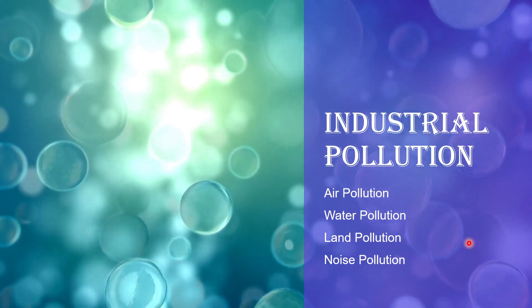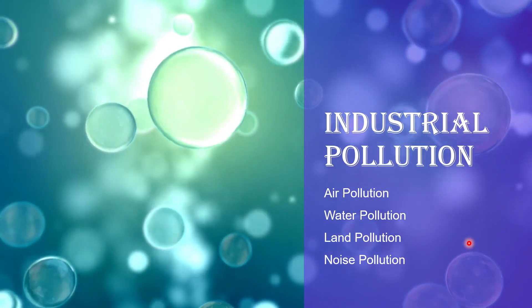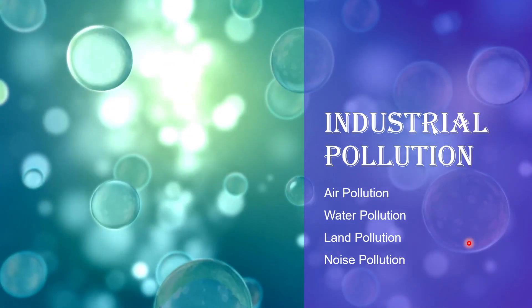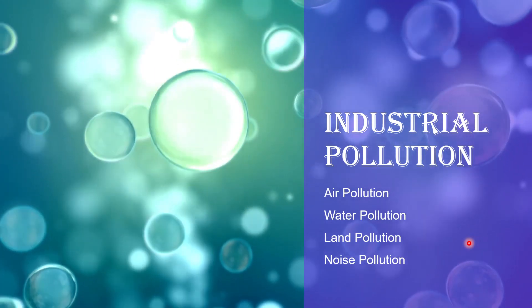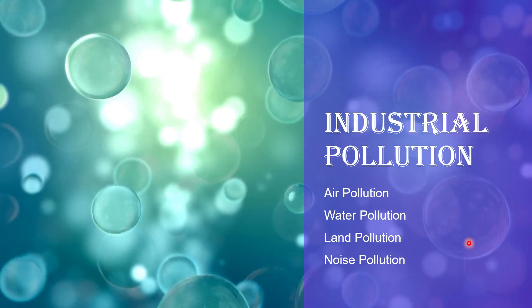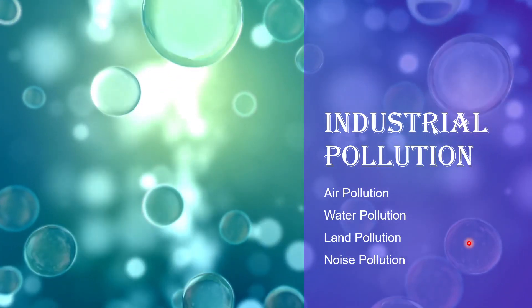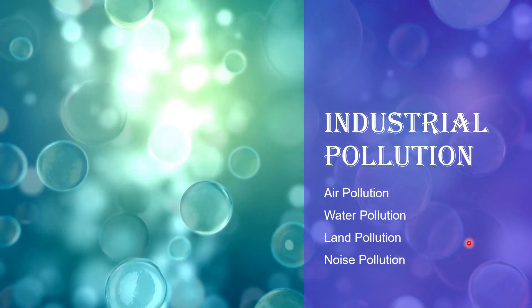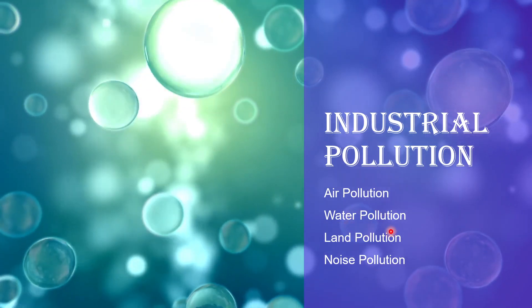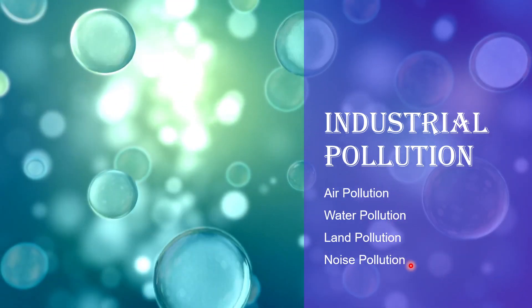Good morning students. In the previous several modules we had been learning about industries and we have come to know how industries are so important for the economy. However, they do a lot of pollution, so today we are going to learn about the pollution which occurs due to excessive industrialization. We are going to focus on four major types of pollution: air pollution, water, land, and noise pollution.